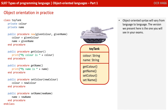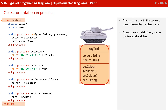Let's look at some code. Object-orientated syntax will vary from language to language — the version we present here is the one you're going to see in the exams. The class starts with the keyword class, followed by the name, in this case toy tank. To end the class definition, we use the keyword end class.